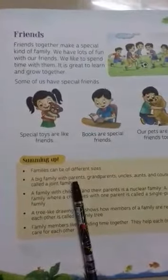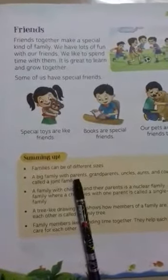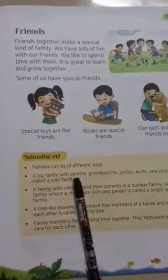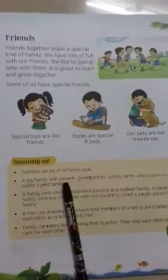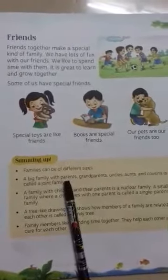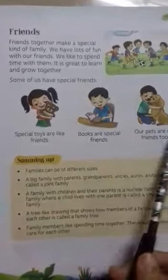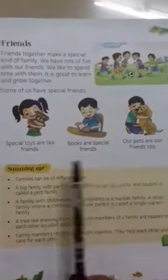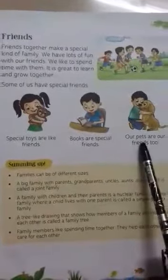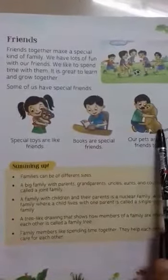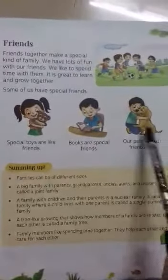As your friends listen to you, you become very friendly with them. Your friends love you and like you, and they also share everything with you. So besides having a family, you must have friends — otherwise you are incomplete. Try to be friends with everyone and do not fight with your friends. There are also some special friends — they can be your toys, books, or pets.